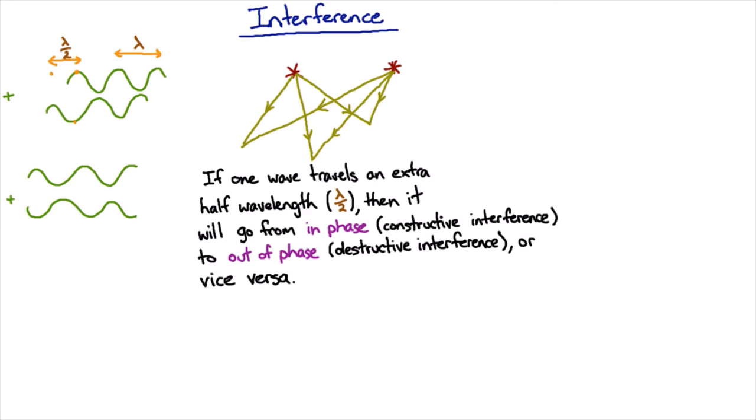Destructive interference requires it to be a wave. If I was throwing actual particles together, then you'd always just get lots of particles where they meet. It doesn't matter whether they're in or out of phase - that doesn't mean anything.